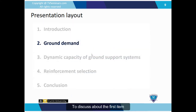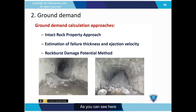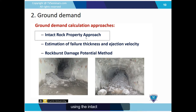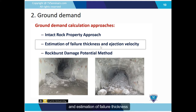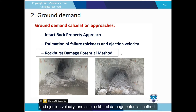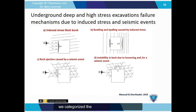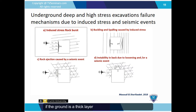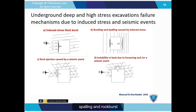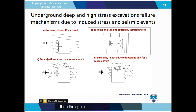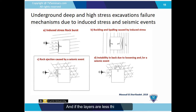To discuss ground demand, as you can see here, we have three methods: using intact properties with estimation of failure thickness and ejection velocity, and the rock burst damage potential method. In the figures, you can see ejection from both sides of the tunnel walls and from the face of the tunnel. We categorize the major failure mechanisms under seismic load: if the ground is thick-layered rock, rock burst and spalling will most likely happen. If the layers are vertical and thick, spalling occurs. If the layer is thin, buckling is the most likely case.